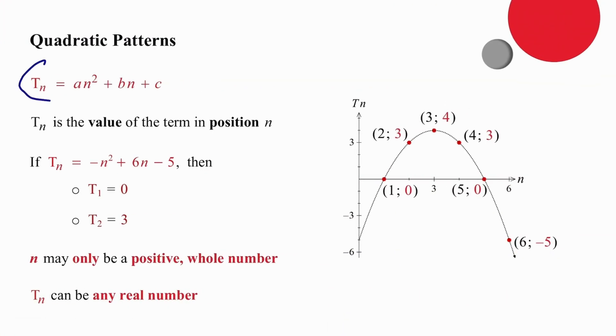The general formula for a quadratic pattern is very similar to the general formula for a parabola. In this particular case, we are working with a quadratic pattern given by the formula minus n squared plus 6n minus 5. That means that if we plot the points associated with this pattern, we will have a parabolic curve with a maximum value.